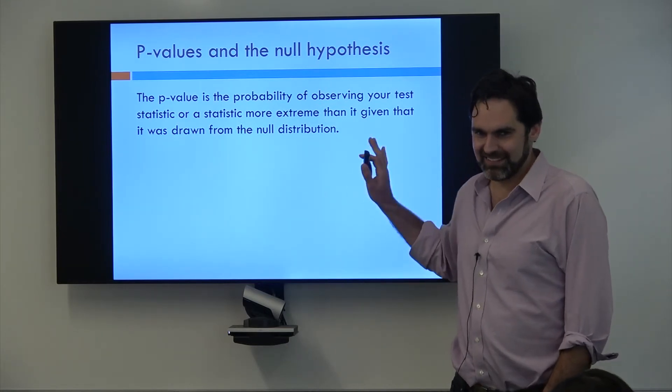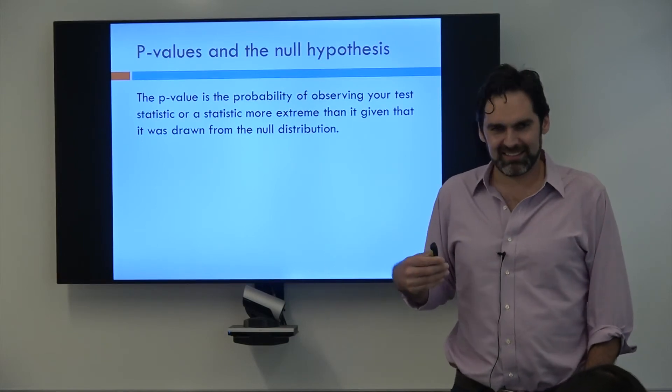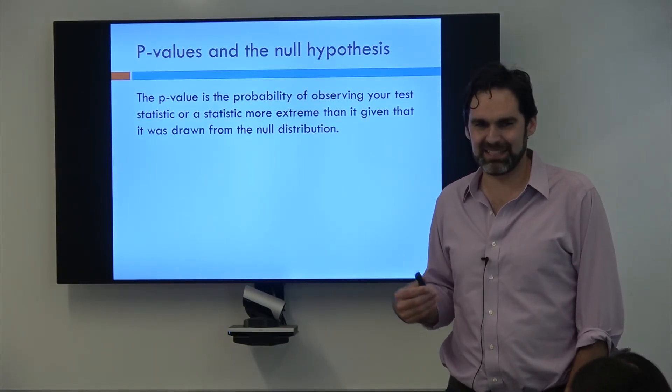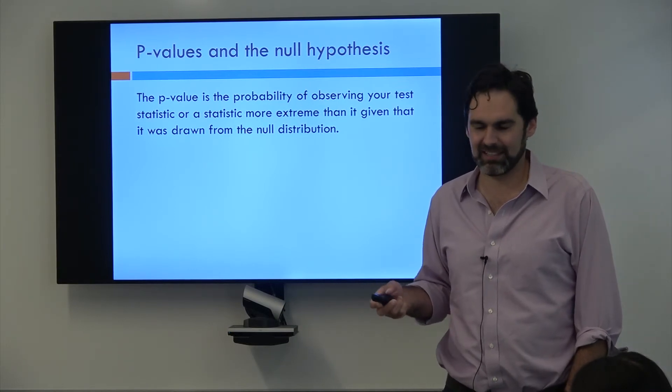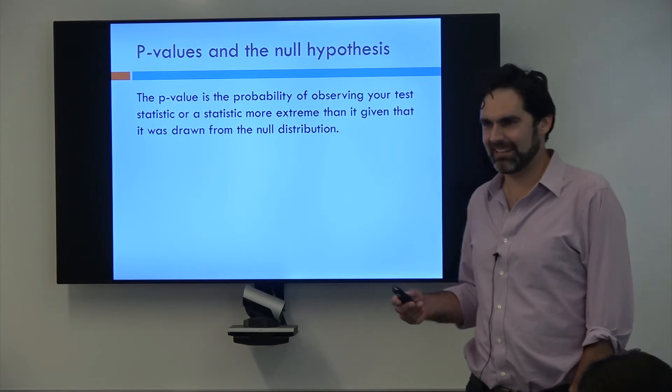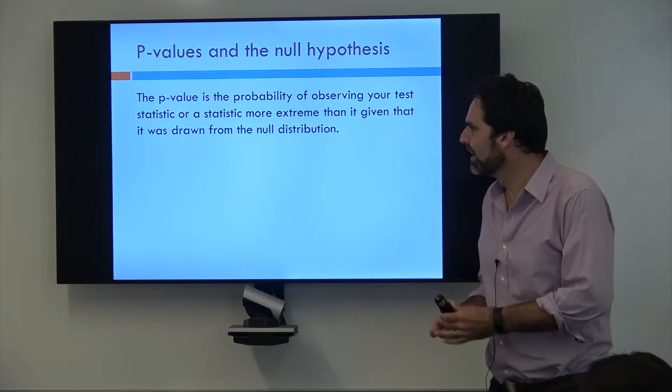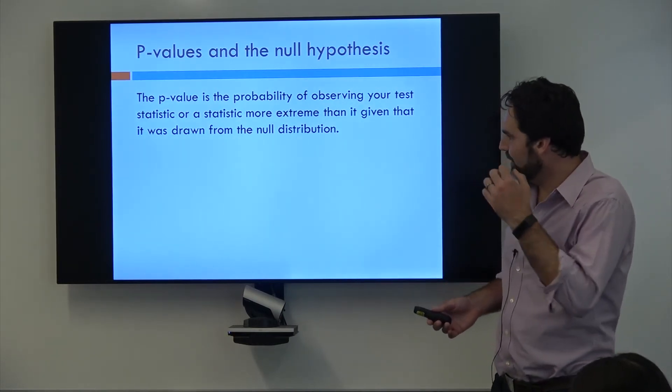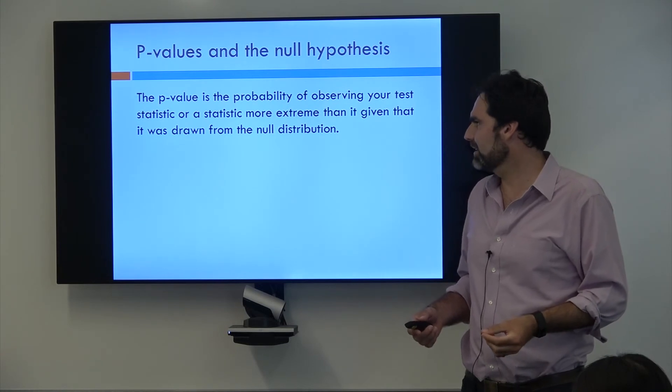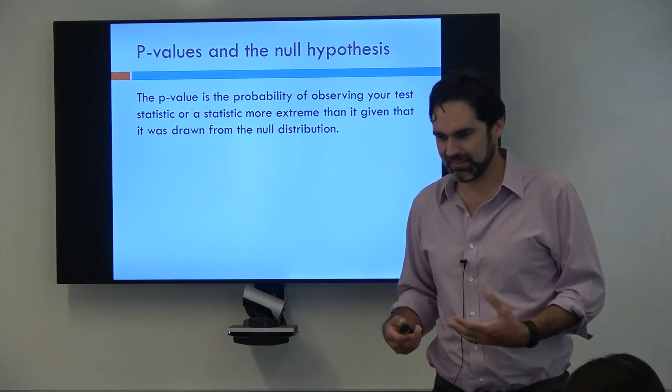So this is, there's a few definitions, but this is one that I like. And this is something that not today, but at some point you should literally just commit to memory so that when somebody asks you what's the p-value, especially if you ever take a class with like Eliezer or Iran or Sriram, when they ask you that, you can like raise your hand and they're going to be extremely impressed. But it's the probability of observing your test statistic or a statistic more extreme than it, given that it is drawn from the null distribution. So that's kind of what we just looked at.